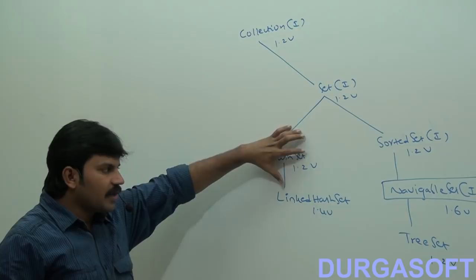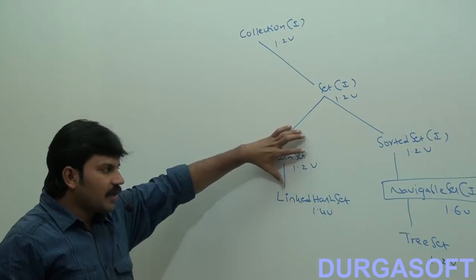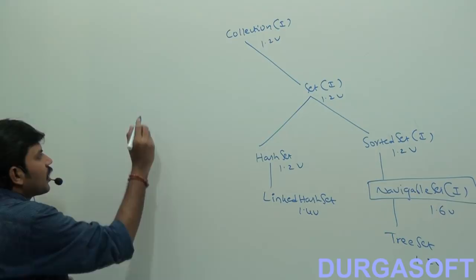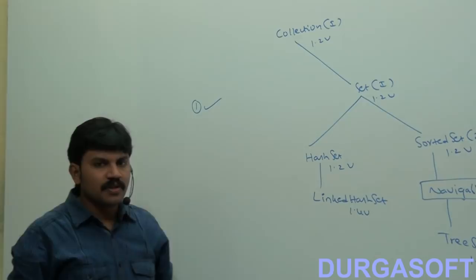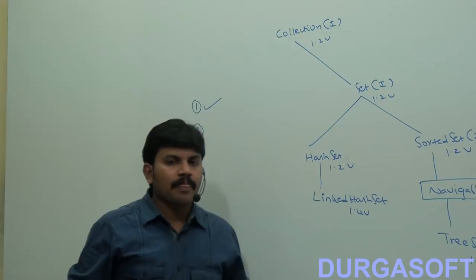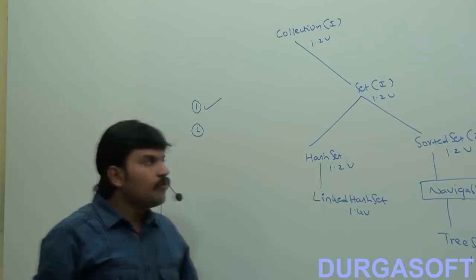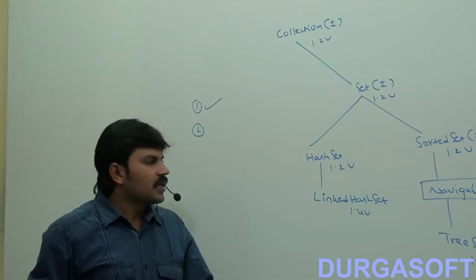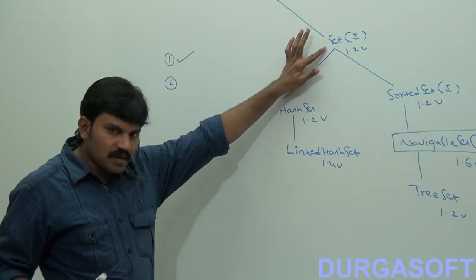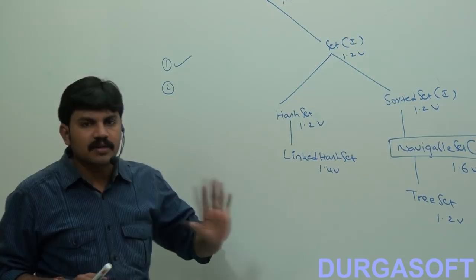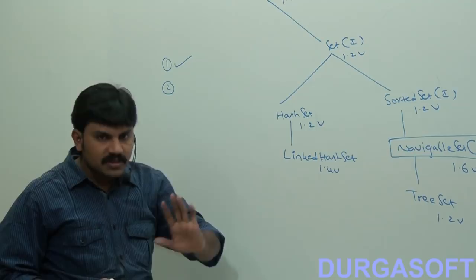First, when should we go for Set and what is Set? Set is the child interface of Collection. We should go for Set when we want to represent a group of individual objects where duplicates are not allowed and insertion order is not important.